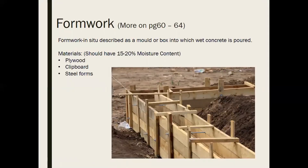Formwork is described as a mold or box into which wet concrete is poured. Materials used include plywood, chipboard, or steel forms, and they should have 15 to 20 percent moisture content. If too dry, the formwork draws moisture from the concrete and it dries too quickly; if too wet, it adds moisture and the concrete doesn't dry properly. Read more on pages 60 to 64.